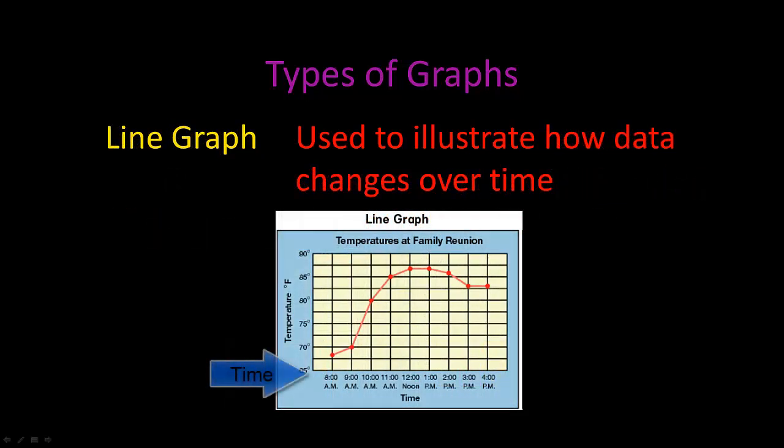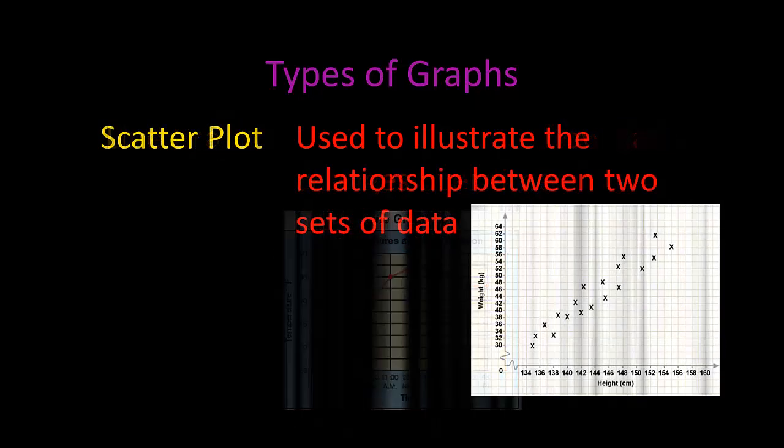The line graph is used to illustrate how data changes over time. And the last type of graph is the scatter plot, which is used to illustrate the relationship between two sets of data.